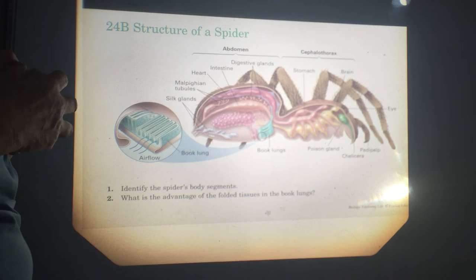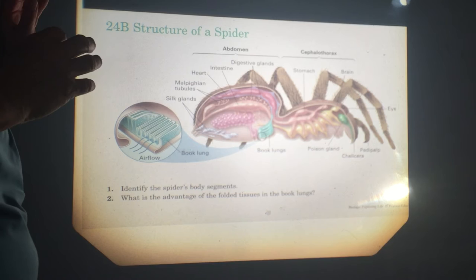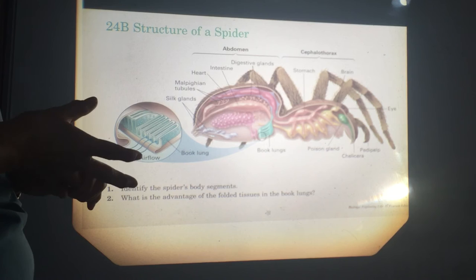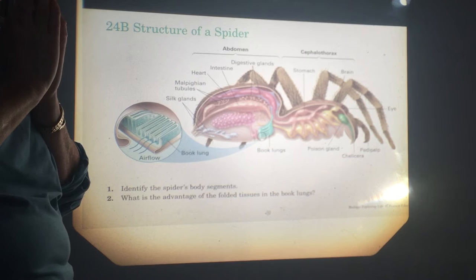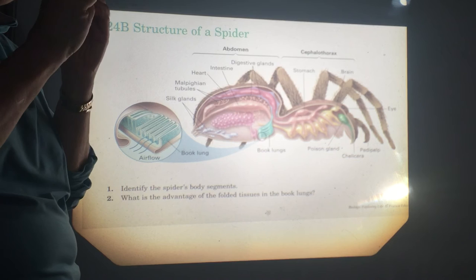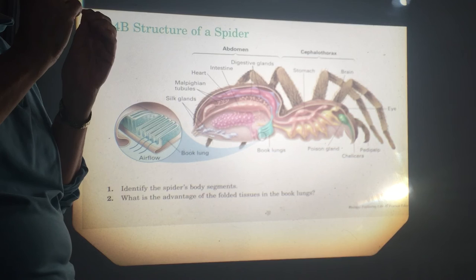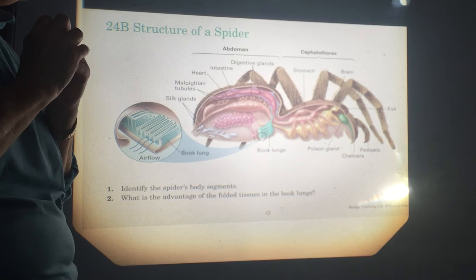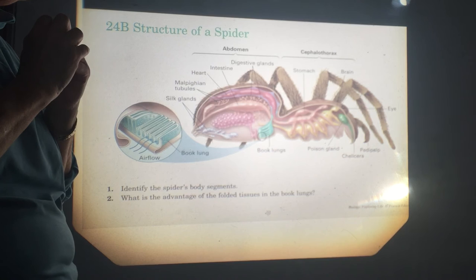I just wanted to make sure you saw a diagram of the structure of a spider. Arthropods — particularly insects and spiders — are small and very difficult to dissect, because you have to get through the outer exoskeleton and then the structures inside, the muscles and so on, are very delicate. It takes a certain type of person to do a dissection on, say, a grasshopper or a spider, so we're going to have to rely on diagrams for some of those questions.